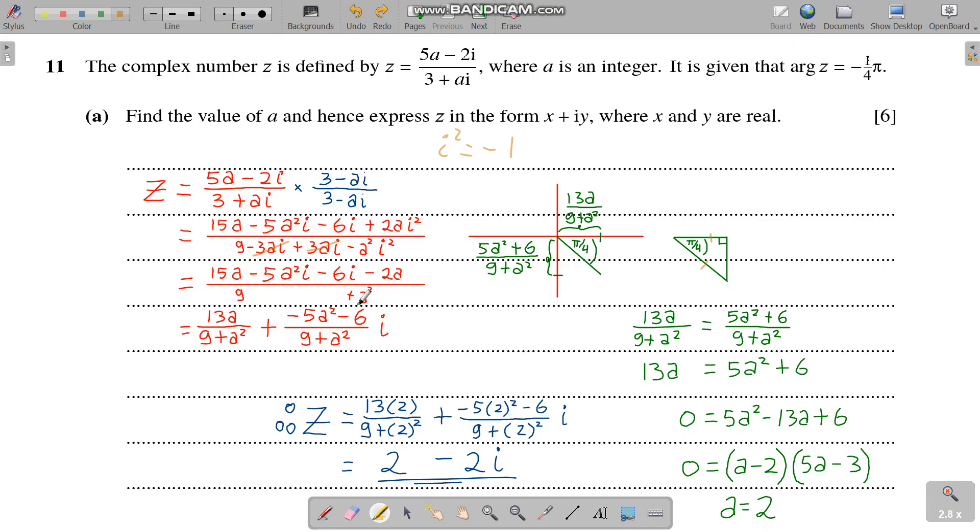Now if you just draw the Argand diagram, this length is 13a over 9 plus a squared because that's the real part, and this length is 5a squared plus 6 over 9 plus a squared. Of course we ignore the negative here because we're talking about the length, not the coordinates. So if you look at the angle, it says minus 1/4 pi.